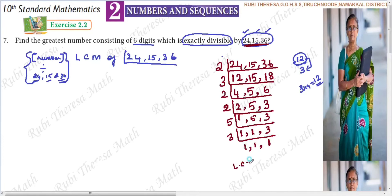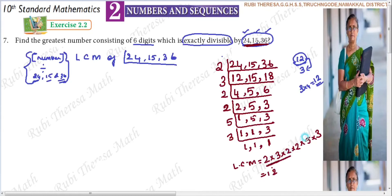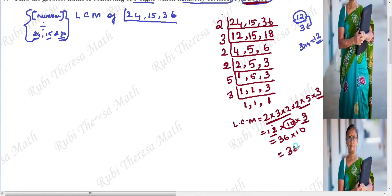So LCM would be 2, 3, 2, 2, 5, 3 — all these prime factors should be multiplied. The LCM is the product of powers of primes. That gives us 2 times 3 are 6, 6 times 2 are 12, then 2 times 5 are 10, into 3. So 12 times 3 are 36, then 36 times 10 is 360. So the LCM of these 3 numbers will be 360.